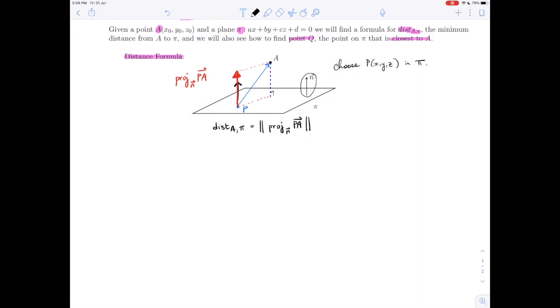The distance from our point A to our plane π is going to be the norm of that projection vector. So the norm of the projection of PA onto N. We can simplify that a lot to give the standard distance formula. Let's write our projection in terms of the projection formula: PA dotted with N over the norm of N squared, all of that times vector N, and of course we want the norm of that.